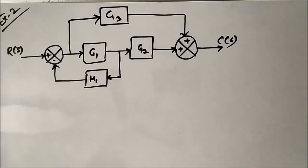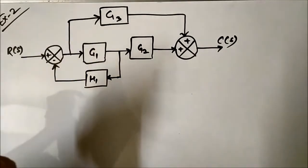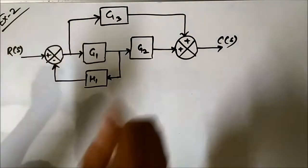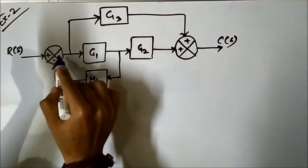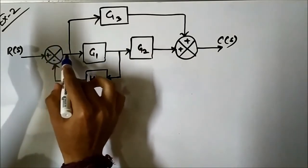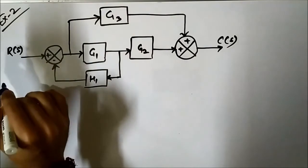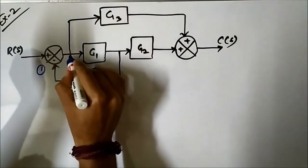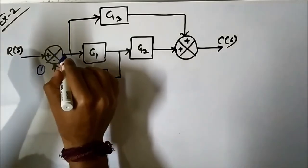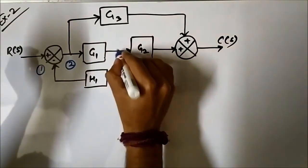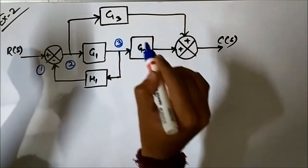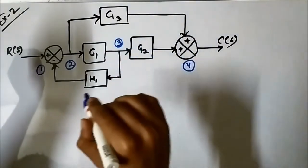This is the second example of block diagram to signal flow graph conversion. Again, we have taken a very small block diagram. Here I have deliberately placed the takeoff point immediately after the summing point, but I am considering them as separate nodes. This is the summing point — node number 1. This takeoff point, even though immediately after the summing point, will be node number 2. This is another takeoff point — node number 3. And this summing point will be node number 4.